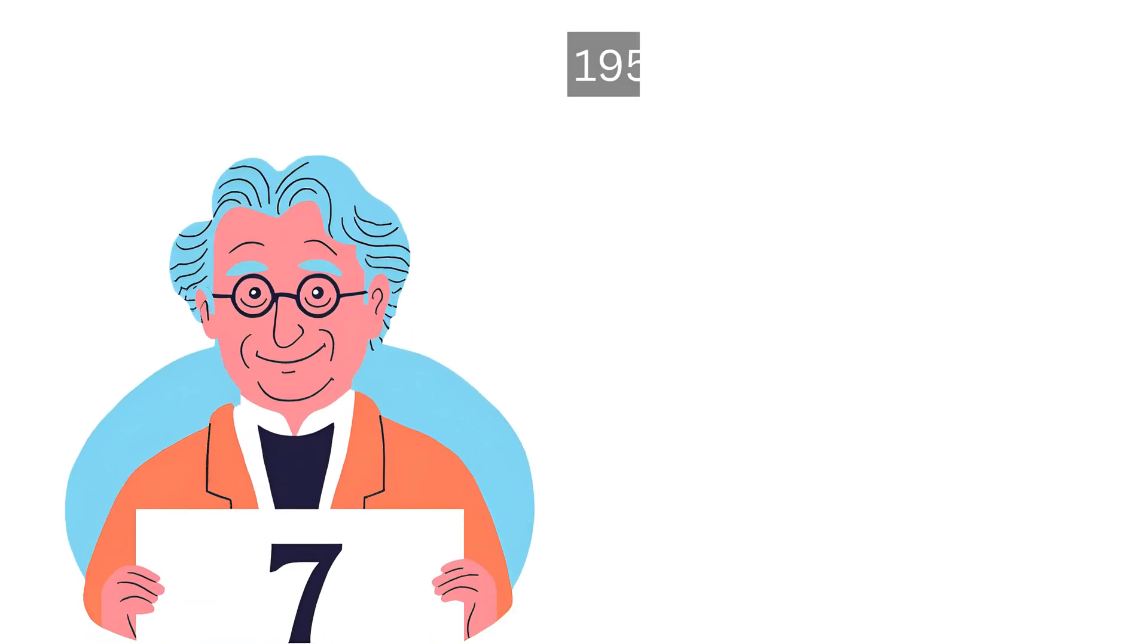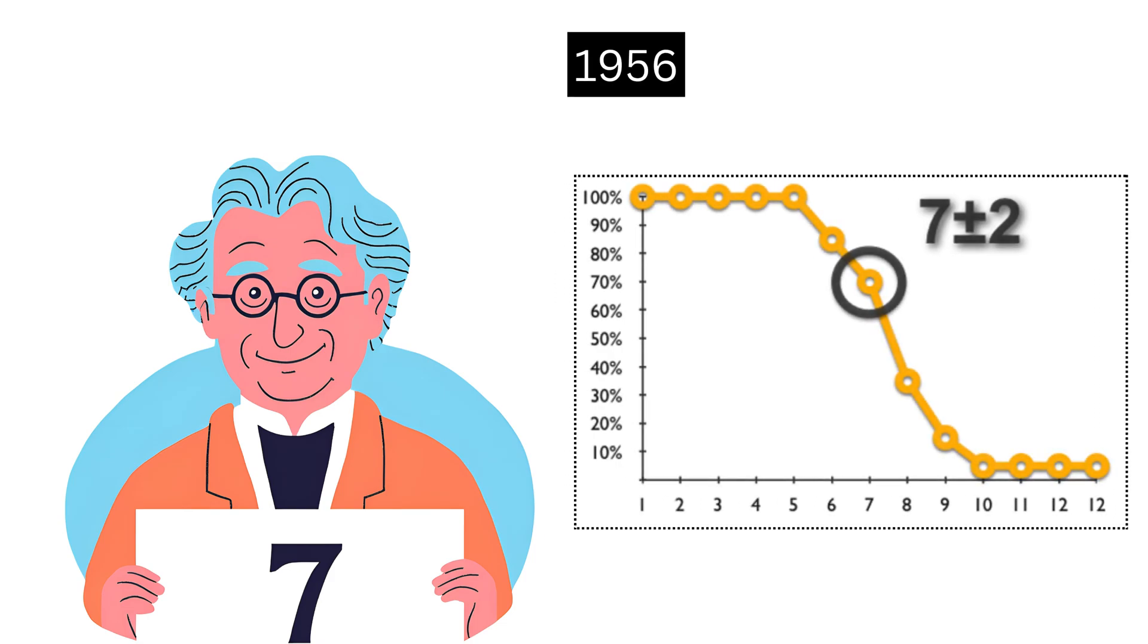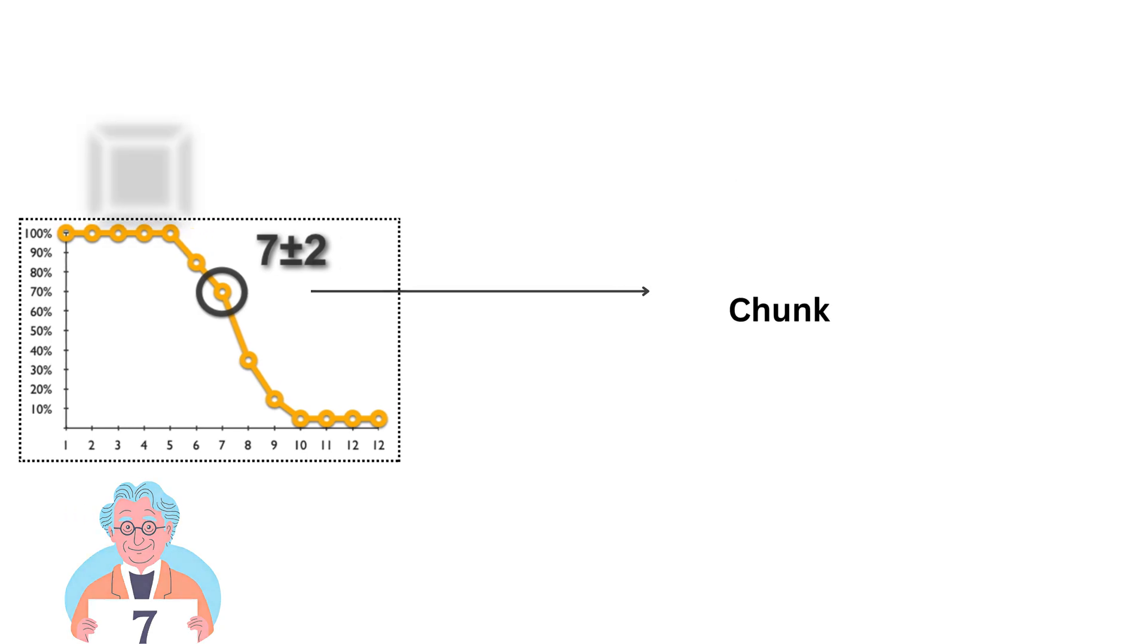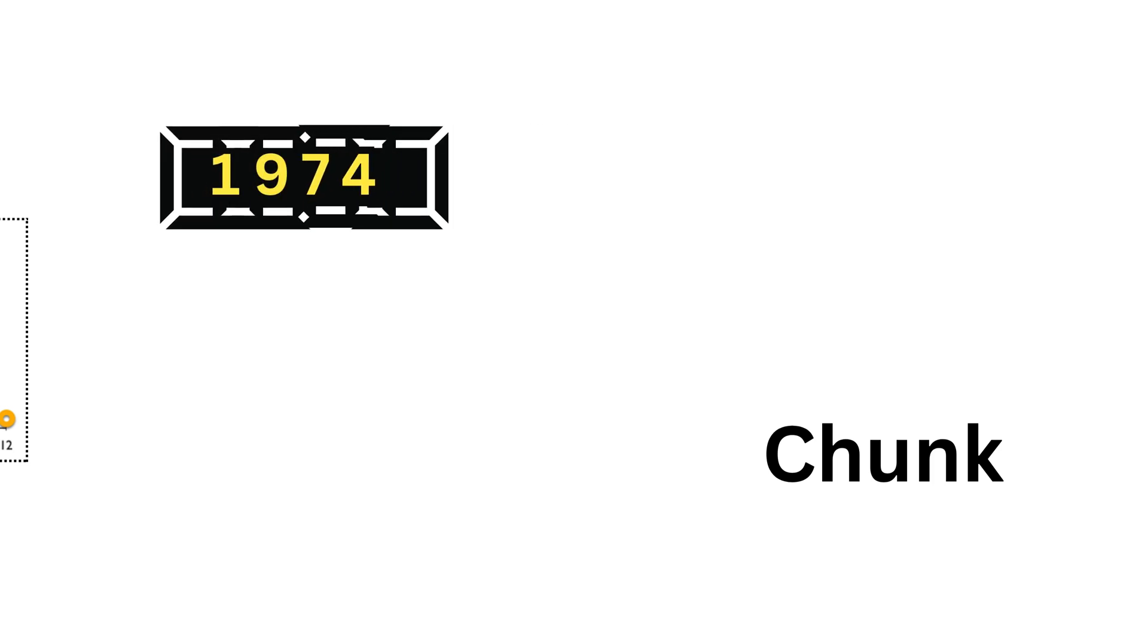All right, let's break this down. George Miller, in his groundbreaking 1956 paper, revealed that our short-term memory, or STM, can hold about seven chunks of information at once. Think of chunks as small packets of data. Instead of remembering single digits, your brain groups them into chunks, like turning one, nine, seven, four into 1974. Clever, right?